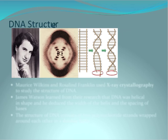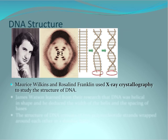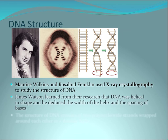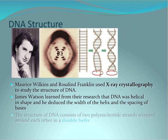More importantly, the structure of DNA was determined by the work of Rosalind Franklin and Maurice Wilkins, who used a new technique — x-ray crystallography — by which a molecule is frozen and a photograph is taken of the biomolecule to determine the actual double helical structure of DNA. James Watson, upon learning that DNA was helical in shape, calculated the width of the helix and the spacing of the bases, which he found to be about 3.4 angstroms. The structure of DNA consists of two polynucleotide strands, shown in the upper right, wrapped around one another in a double helical form.